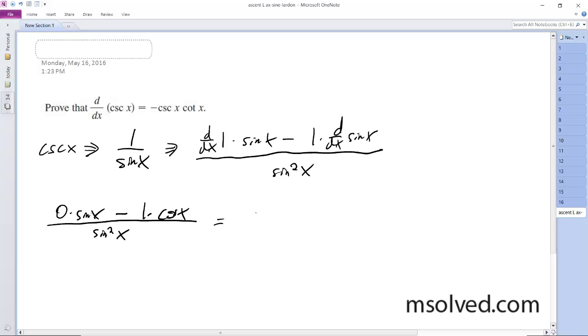So what we get is 0 minus cosine x. And I'll divide this up to sine x, sine x. So we get negative cosine x over sine x, and then sine x.